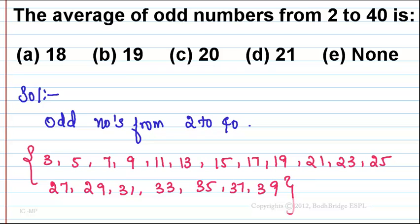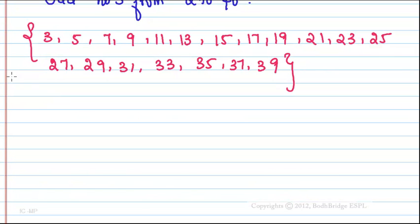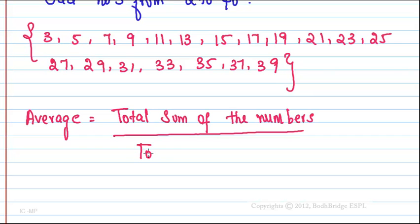Odd numbers are the numbers where the integer cannot be divided by 2 and the last digit will be 1, 3, 5, 7, and 9. So we have the odd numbers. The formula for average here is average equals total sum of the numbers divided by total numbers.